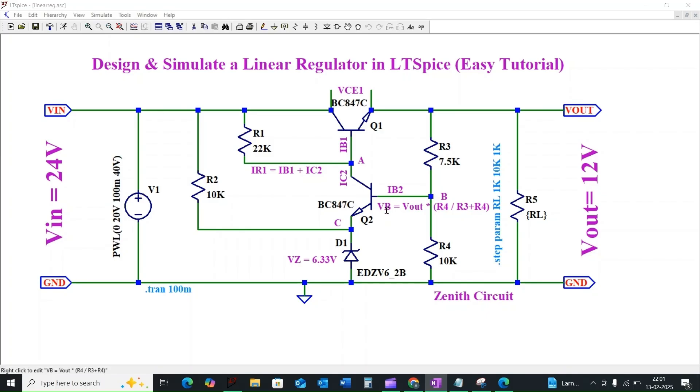...a stable output despite changes in the input voltage and the load current. So let us discuss how this circuit is going to work. The first condition will be the output voltage trying to increase. If output voltage tries to increase above 12 volt, the base voltage of Q2 will increase and it will lead to increase in the collector current IC2. If collector current IC2 increases, base current IB1 will go to reduce. Here IR1 is equal to IB1 plus IC2. If the base current of transistor Q1 is going to reduce...